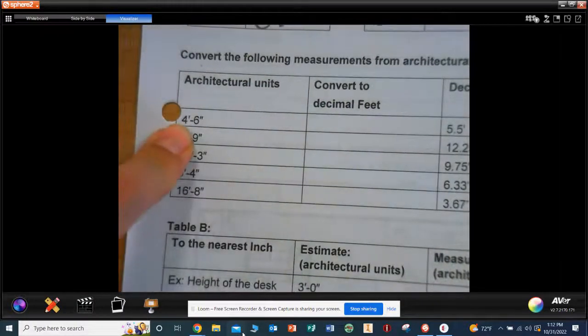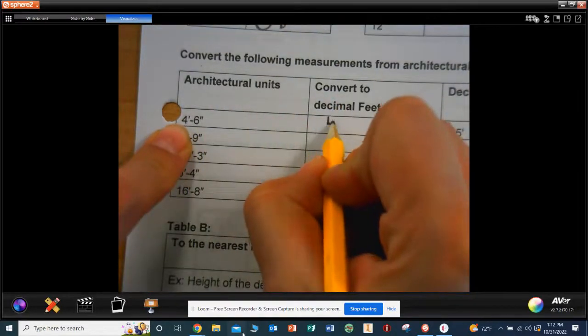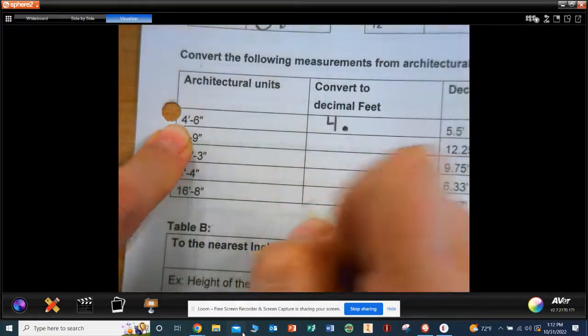So 4 goes where? In front of the decimal. So it's 4 point. Now, the 6 inches.